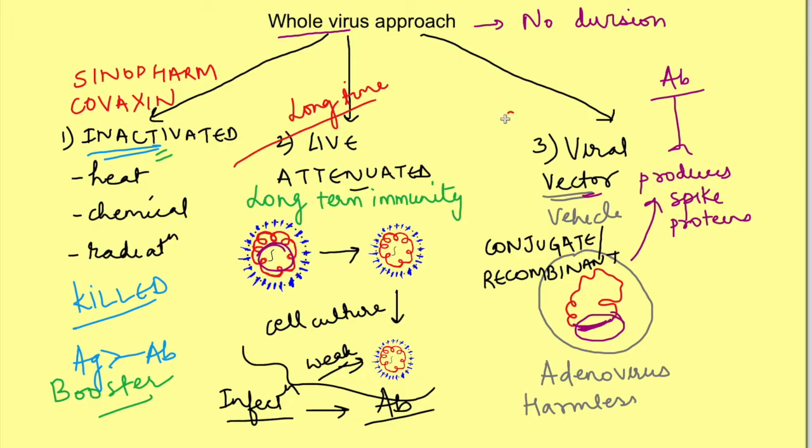Covishield vaccine which is basically written like this: CH for chimpanzee, Ad is adenovirus, Oxford one novel coronavirus vaccine is in this category. Then another Sputnik V also belongs to this category. Then the vaccine developed by Janssen pharmaceutical i.e. ad26.cov2.s is also of this category. Here again AD stands for adenovirus and Cov2 is for SARS Cov2 virus and finally S stands for spike proteins.